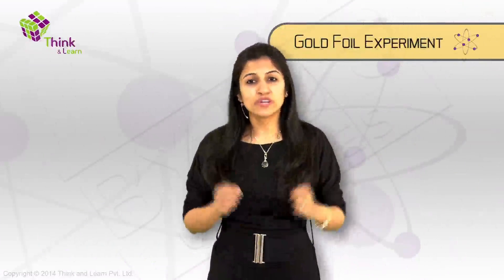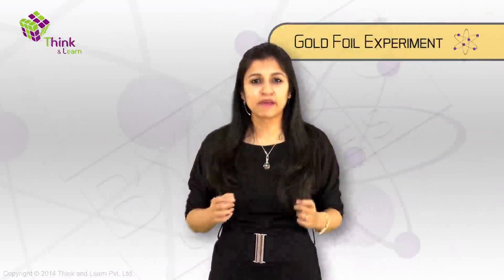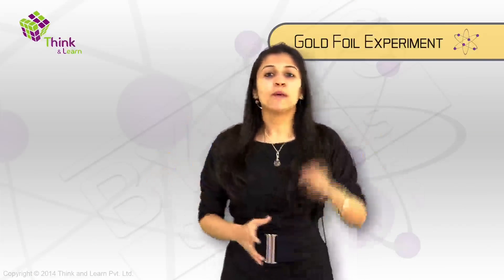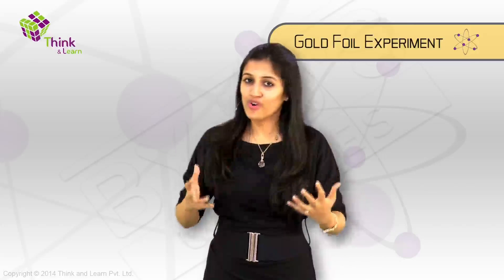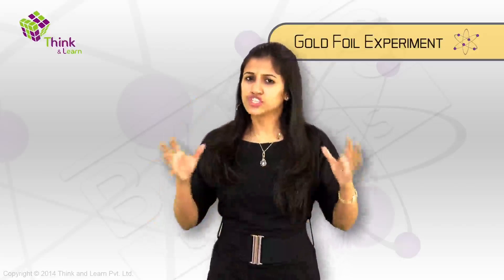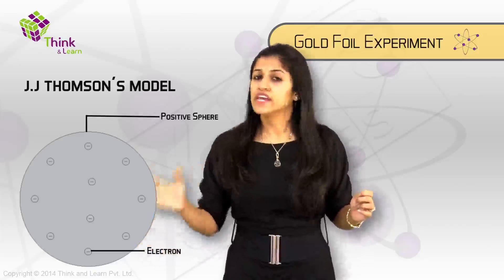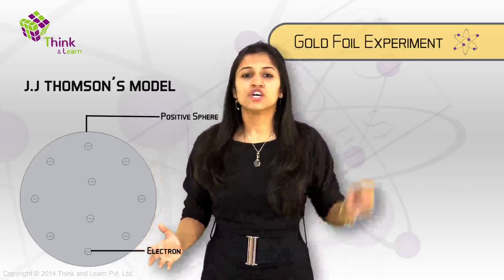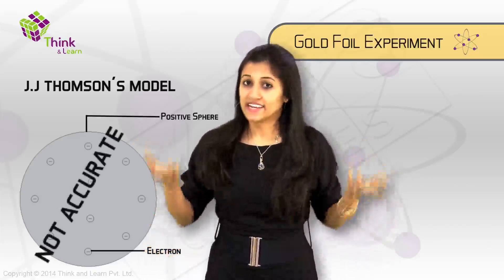Ernst Rutherford, along with his colleagues Hans and Ernst Marsten, did a famous gold foil experiment to determine that the atom is not like a tennis ball or a billiard ball, but it does have a central dense region which we now call the nucleus, and that the electrons actually revolve around this dense mass. This is how J.J. Thomson thought the atom would look like — electrons negatively charged, stuck in a positively charged dough. Rutherford and his co-workers, through the gold foil experiment, showed that the plum pudding model was not exactly accurate.